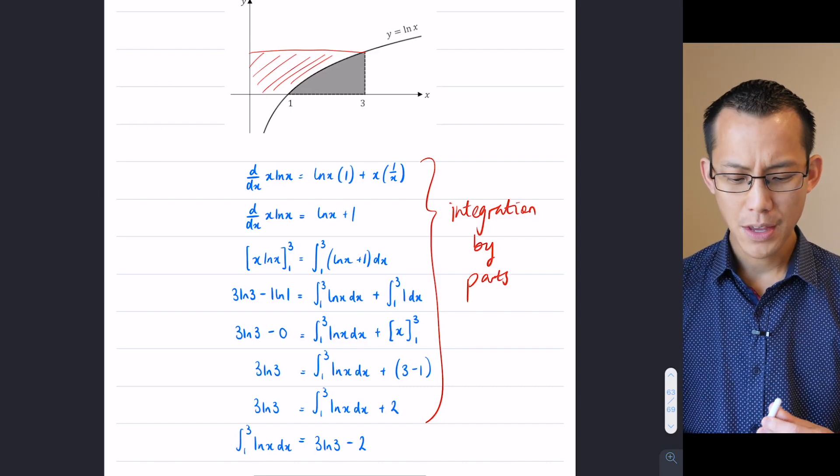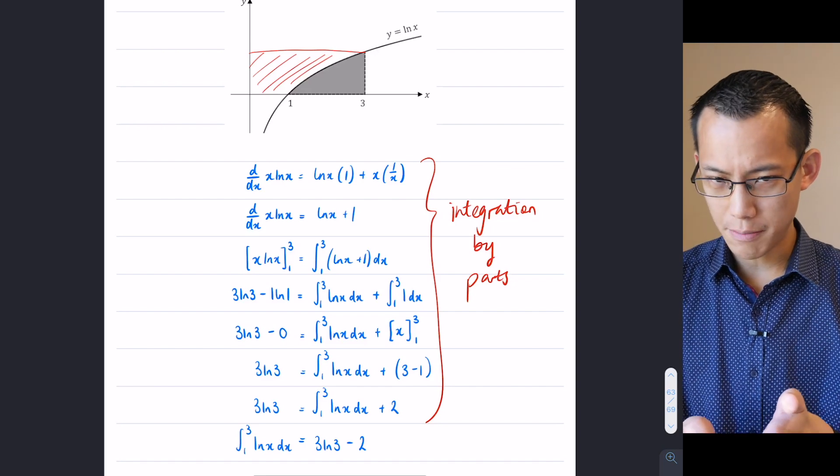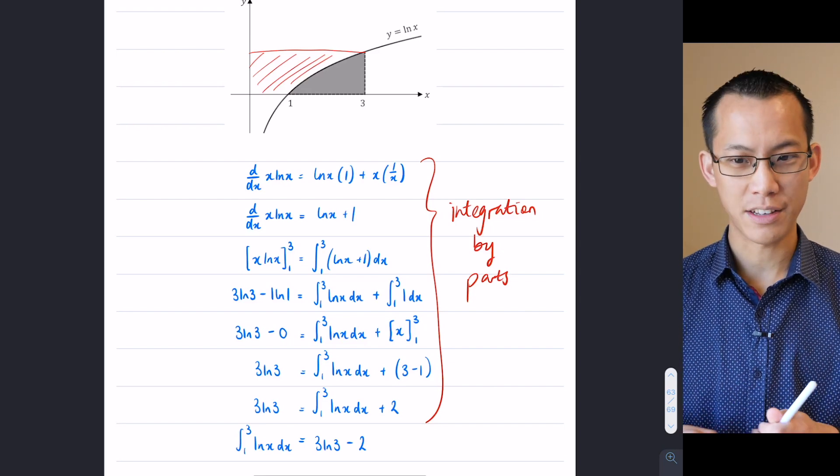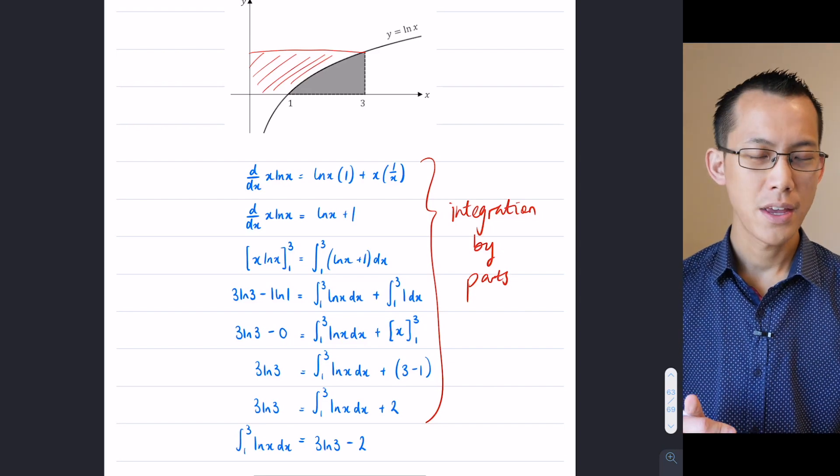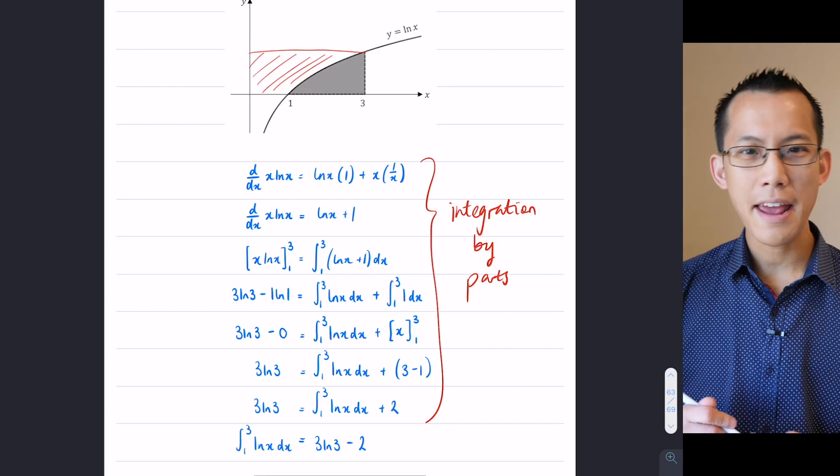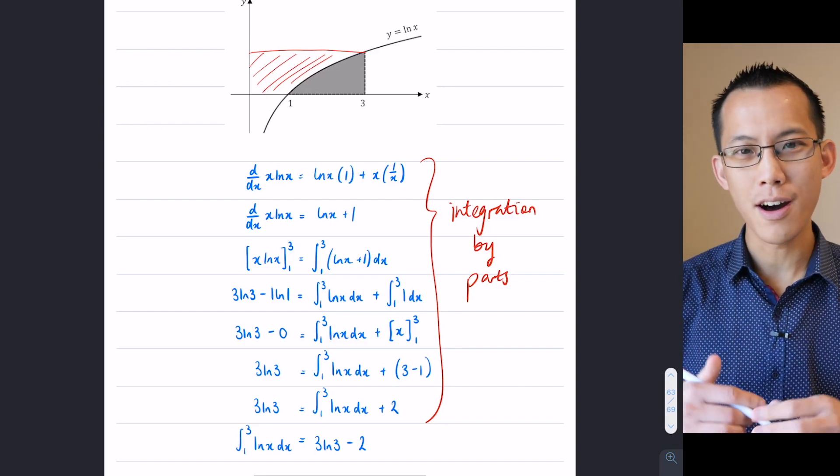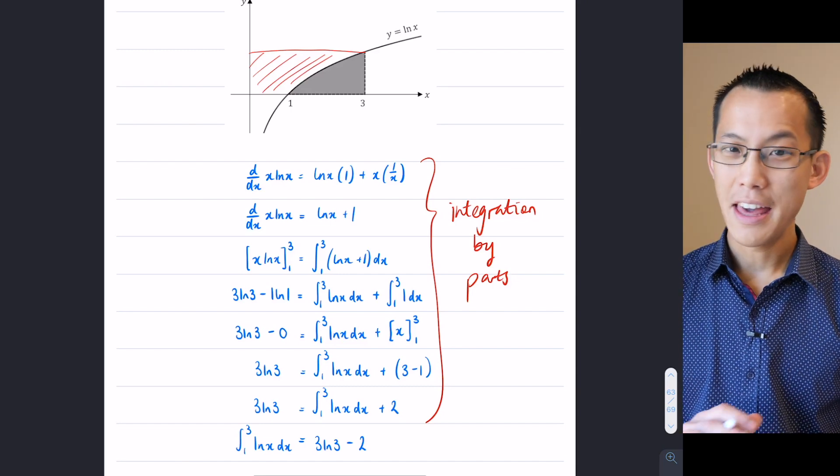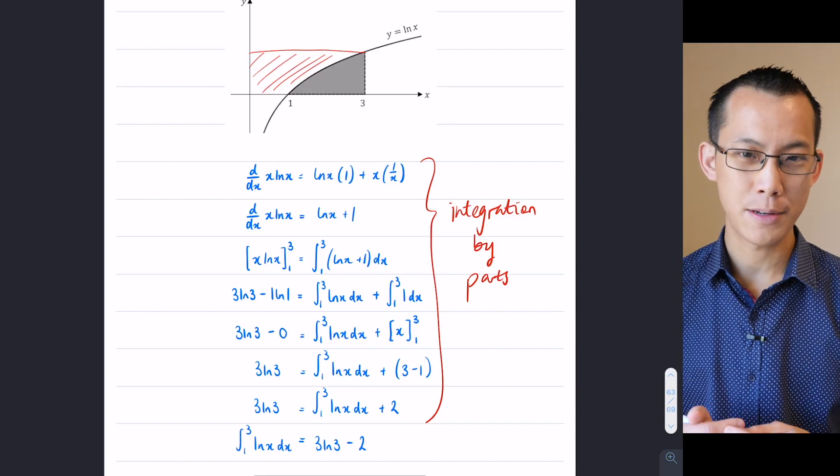The reason why I'm drawing your attention back to this is that even though an extension 2 student can integrate y equals log x because they have all this other fancy knowledge, there's some stuff that no matter how advanced you are, no matter what course you're doing, no matter if you're like a university level mathematician or something like that, they just can't be integrated in the way that we've been talking about. You can't find what we call an elementary primitive function.